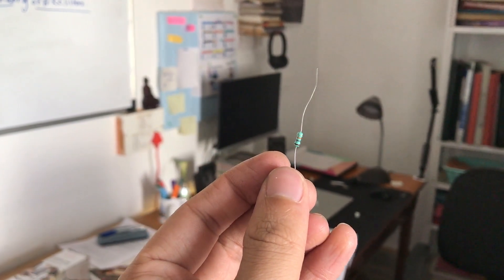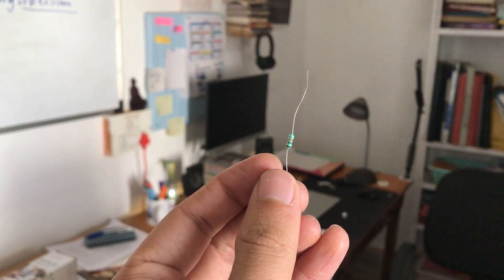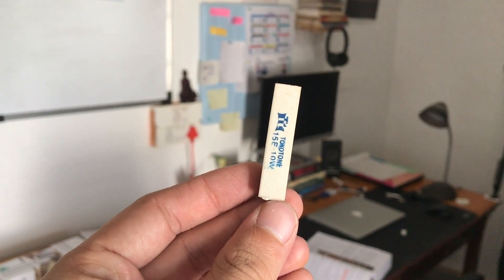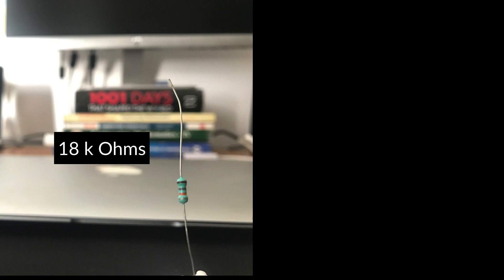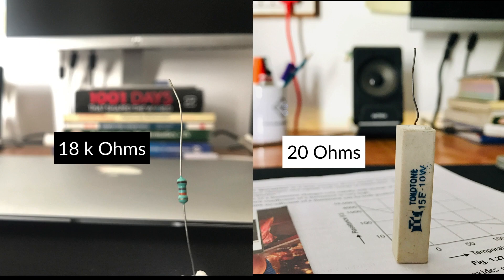Resistance of this resistor is 18 kilo ohms and this is 20 ohms. Even though the resistance of this resistor is 18 kilo ohms, the size is way too small than this resistor, whose resistance is only 20 ohms. The question is, why it is like that?